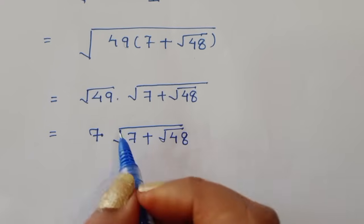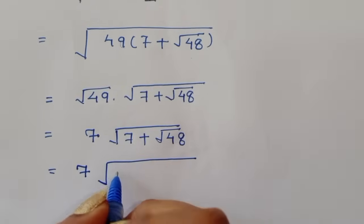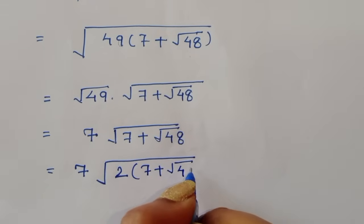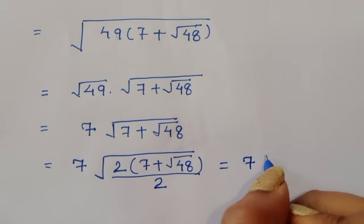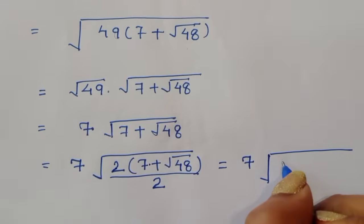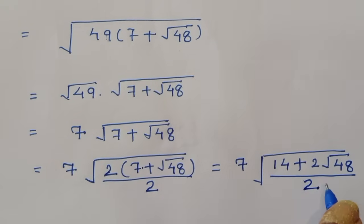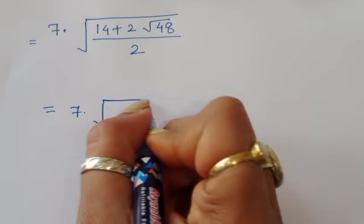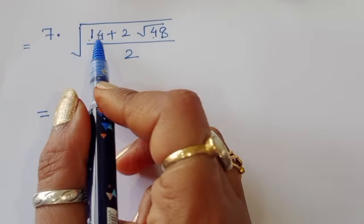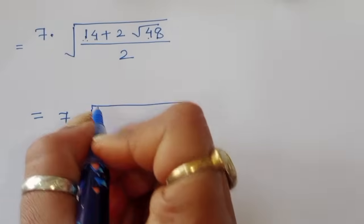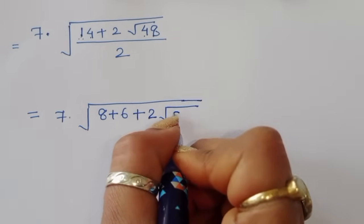Now we can do one more thing: multiply and divide by 2, so we get 7 times square root of 2 times 7 plus square root of 48 divided by 2. Now notice that 14 equals 8 plus 6 and 48 equals 8 times 6. So we can convert: 8 plus 6 is 14, and 2 times square root of 48 equals 2 times square root of 8 times 6.